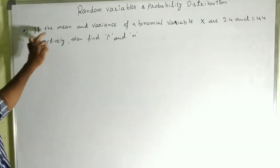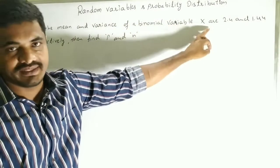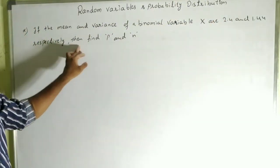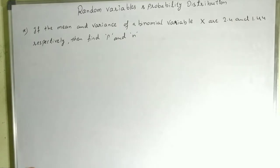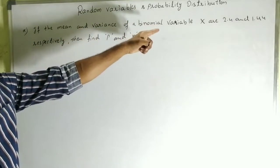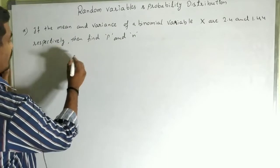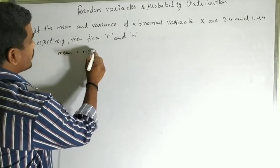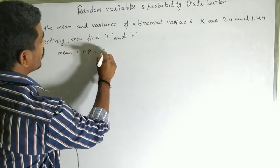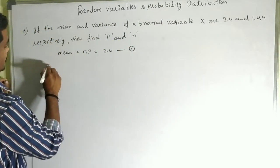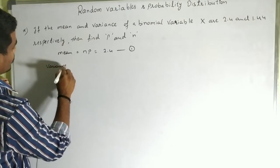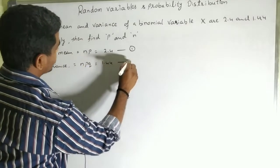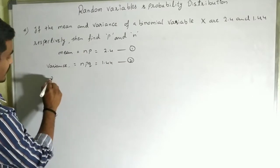Question: If the mean and variance of the binomial variable X are 2.4 and 1.44 respectively, then find p and n. The mean equals np = 2.4, which is equation 1. The variance equals npq = 1.44, which is equation 2.